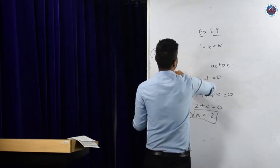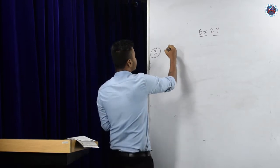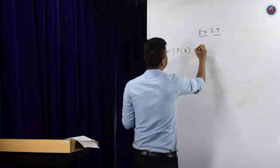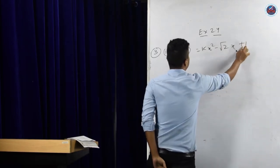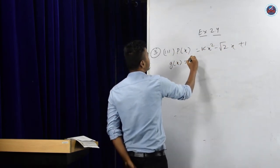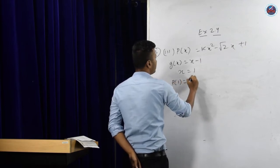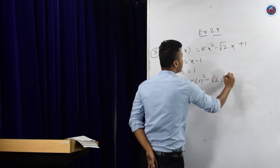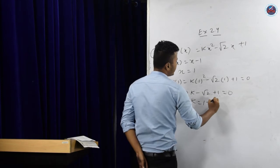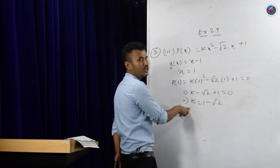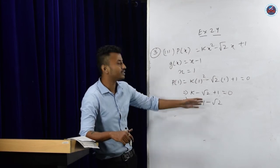One more example: P(x) = kx² minus root 2 times x plus 1. G(x) is x minus 1, so x equals 1. P(1) = k(1)² minus root 2 times 1 plus 1 equals 0. This gives k minus root 2 plus 1 equals 0, so k equals root 2 minus 1. The value of root 2 is approximately 1.414 — you can simplify or leave the answer as root 2 minus 1.